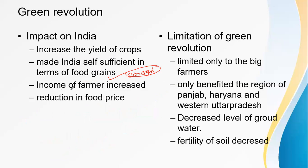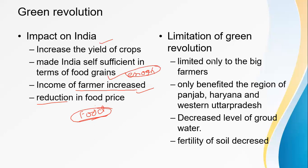Most people living in India at that time were farmers, and most farmers were poor. Because of the Green Revolution, the production increased — more crops meant farmers could sell the surplus in addition to feeding themselves. Because of that, the income of farmers increased. Apart from this, it also led to a reduction in food prices. So these are the impacts of the Green Revolution.